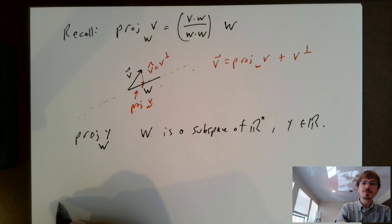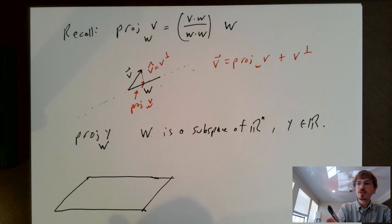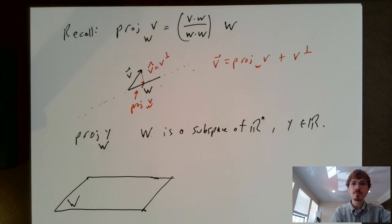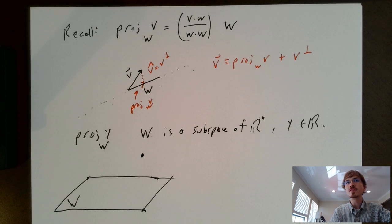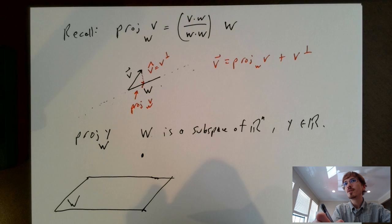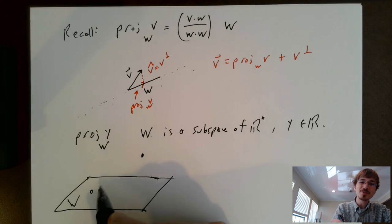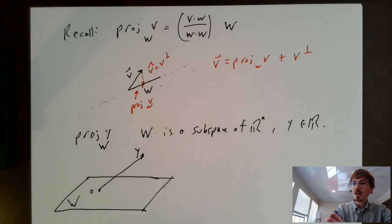Well, let's draw a picture. Here is a picture of my subspace. Here's capital W, my subspace — in this case I've drawn a plane, but it's really a hyperplane in however many dimensions. And suppose my vector y lives in R^n but does not live in the subspace W. So the vector y terminates somewhere outside of W. Let's plot the origin. The origin certainly lives in W since W is a subspace. So here is my vector y.